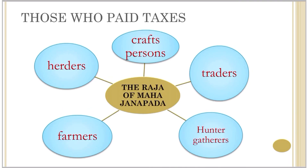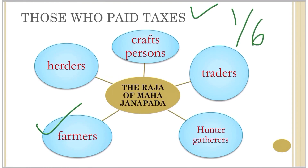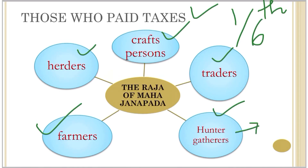As the rulers of the Mahajanapadas built huge forts and maintained big armies, they needed more resources, so they started collecting taxes. Tax on crops was the most important - farmers paid around one-sixth of their produce to the king. Other people such as craftspersons, traders, herders, and hunter-gatherers also paid taxes in various forms, including forest produce like fruits and food.